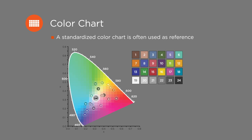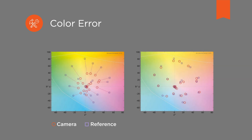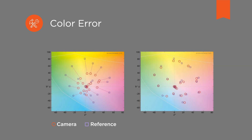For each color patch on the color chart, the camera supplies a color value, which is then compared with the target color value provided together with the color chart. The difference between these two values is the color error delta E. The aim of the calibration process is to set parameters in the camera to minimize the color error for all colors.